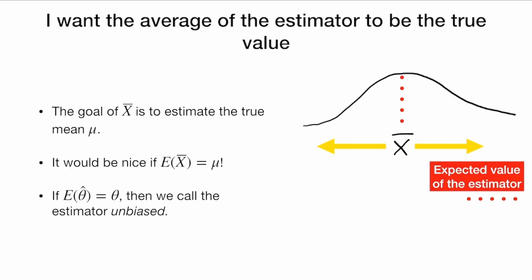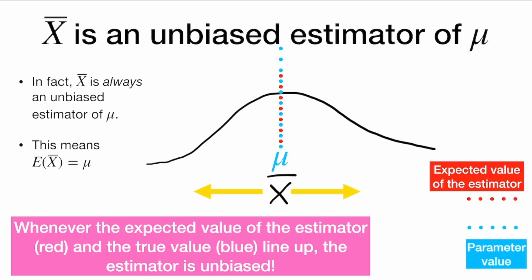If the expected value of an estimator theta hat is equal to its true value theta, then we call the estimator unbiased. So x-bar is an unbiased estimator of mu because E of x-bar is equal to mu. We see the red line here, which is the expected value of x-bar, and the blue line, which is our parameter value mu that we're trying to estimate. Because the red and the blue lines line up, that means our estimator is unbiased. So whenever the expected value of the estimator in red and the true value in blue line up, the estimator is unbiased.